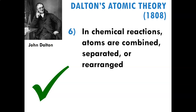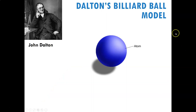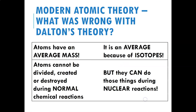If we were going to draw a picture of what Dalton thought the atom looked like, we would just draw a solid sphere. This is often called the billiard ball model — billiards is another name for pool, so it's like a pool ball. Just a solid, single object. It's a little bit too simple, right? So let's look at what was wrong with his theory a little more closely.